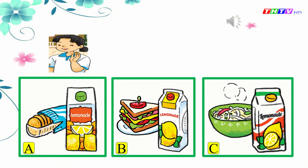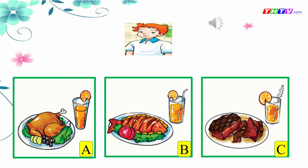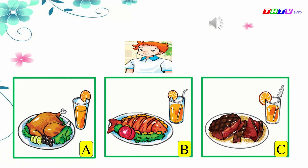Very good. Next one. Look, this is Tony. What would he like to eat and drink? Are you ready to order? Yes, I am. What would you like to eat? I'd like some fish. Anything else? Yes, a glass of orange juice, please. Which one — A, B, or C? Yes, B. Fish and a glass of orange juice.